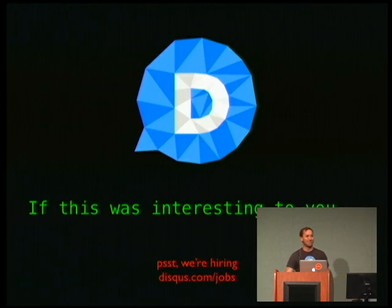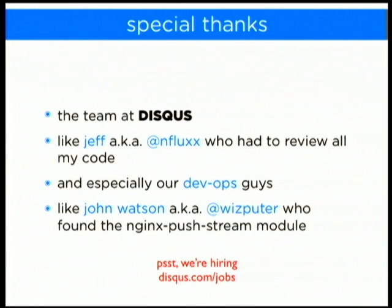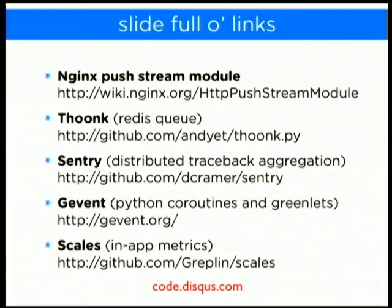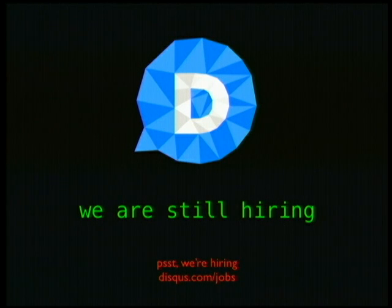If this was interesting to you, I'm still hiring — come talk to me. Thank you to everyone at Disqus — I only had the opportunity to give this talk because of their interesting scale. Jeff reviewed literally every single line of code; our devops guys kept it up, especially John who made it way more efficient by discovering the Nginx push stream module. Here are links to everything I talked about, including Scales — that's how I do my metrics, a Pythonic version of Coda Hale's metrics library, originally by Greplin, now Q.